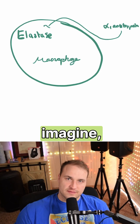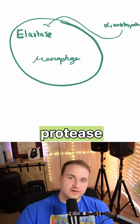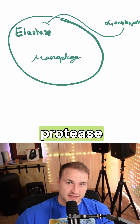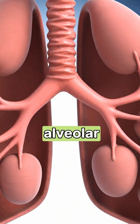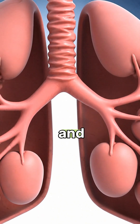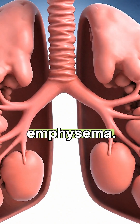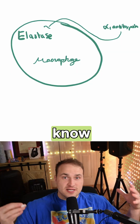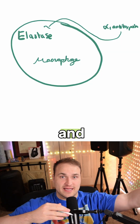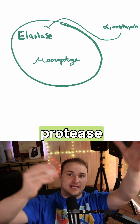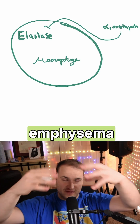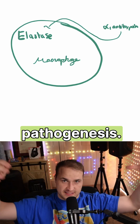If protease activity exceeds antiprotease capacity, then you get destruction of the alveolar septa, and that causes emphysema. What you need to know is that protease and antiprotease imbalance is central to emphysema pathogenesis.